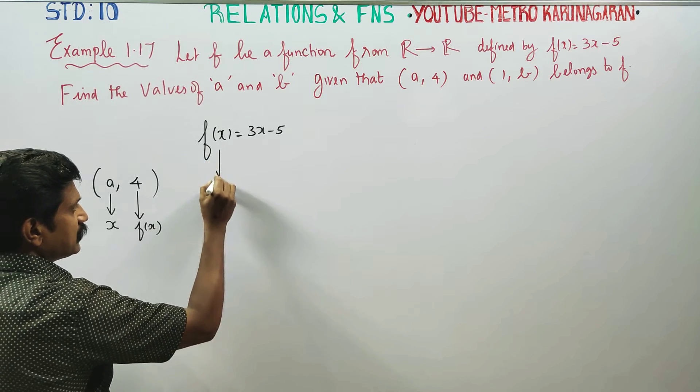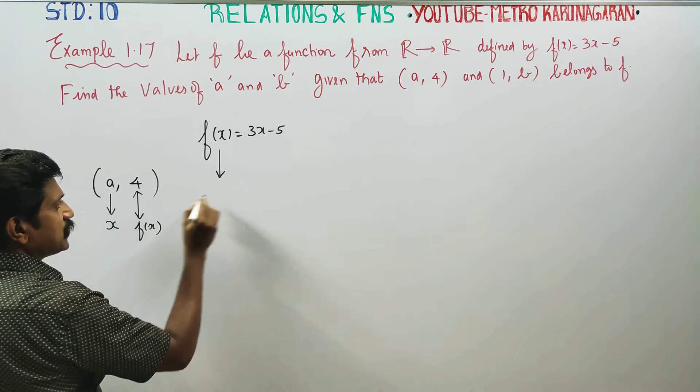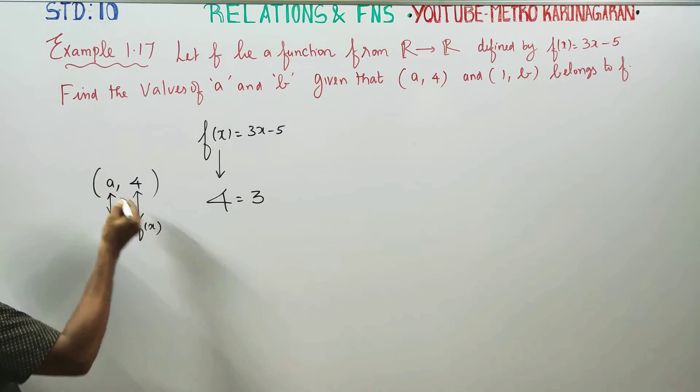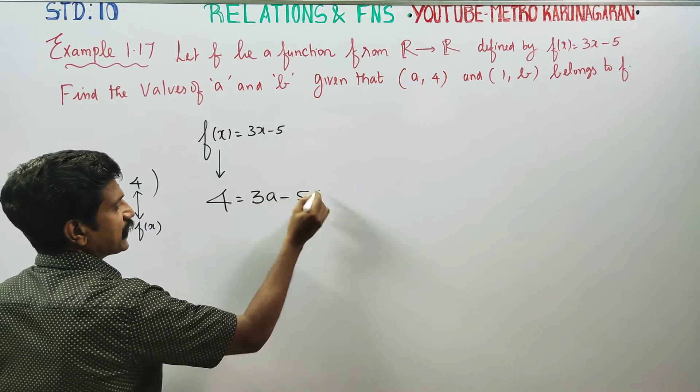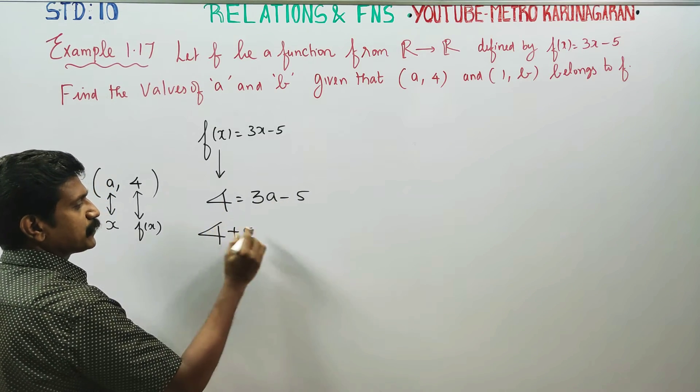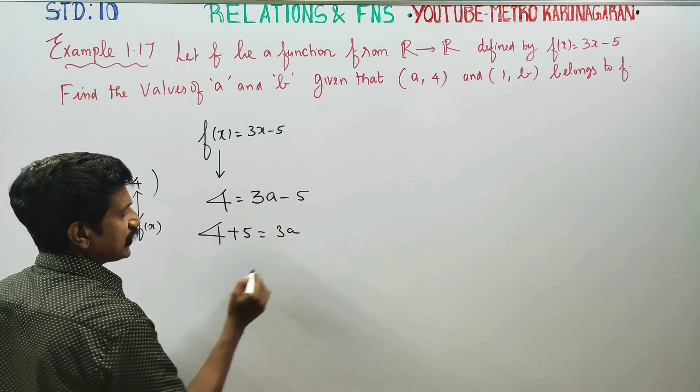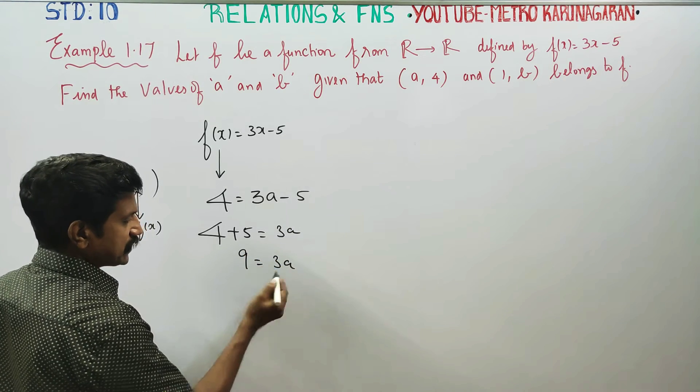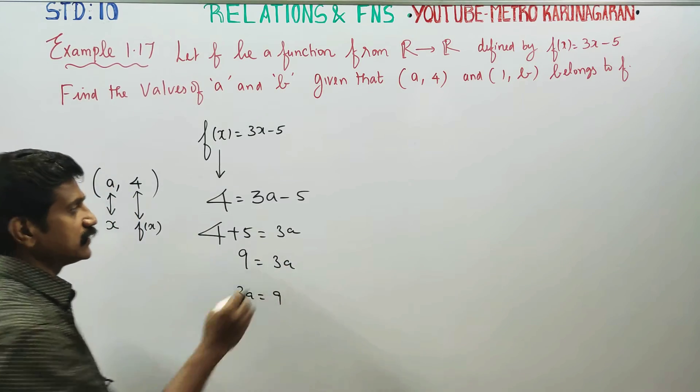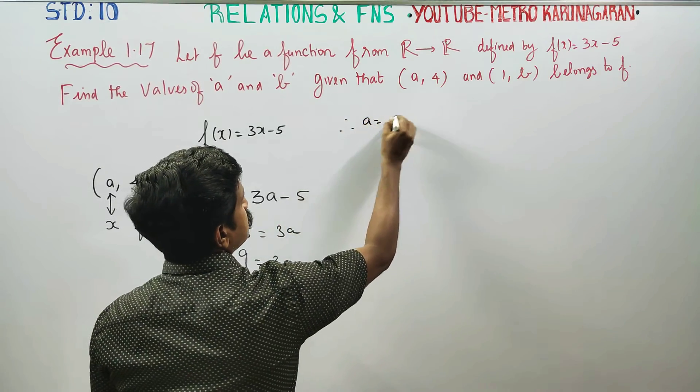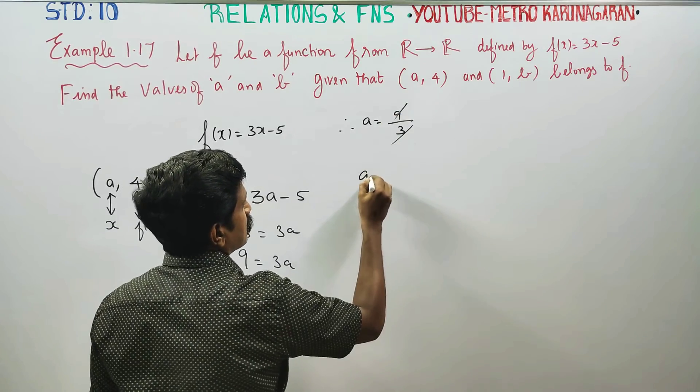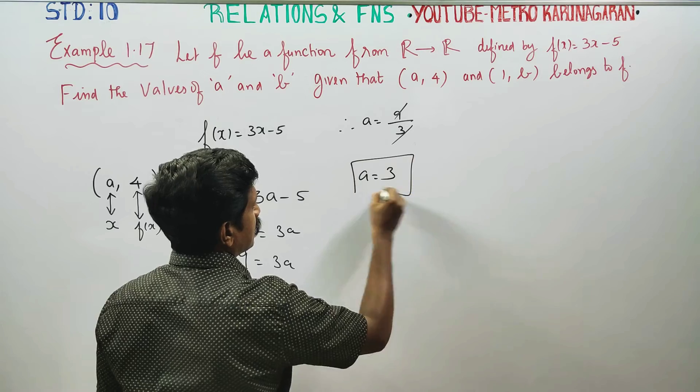f(x) is equal to 4. Use 3 into x is equal to A, minus 5. Minus 5 plus 5 is equal to 3A. So 9 is equal to 3A, 3A is equal to 9. The value of A is equal to 9 divided by 3. Multiply and divide and cancel. A is equal to 3 will be your final answer.